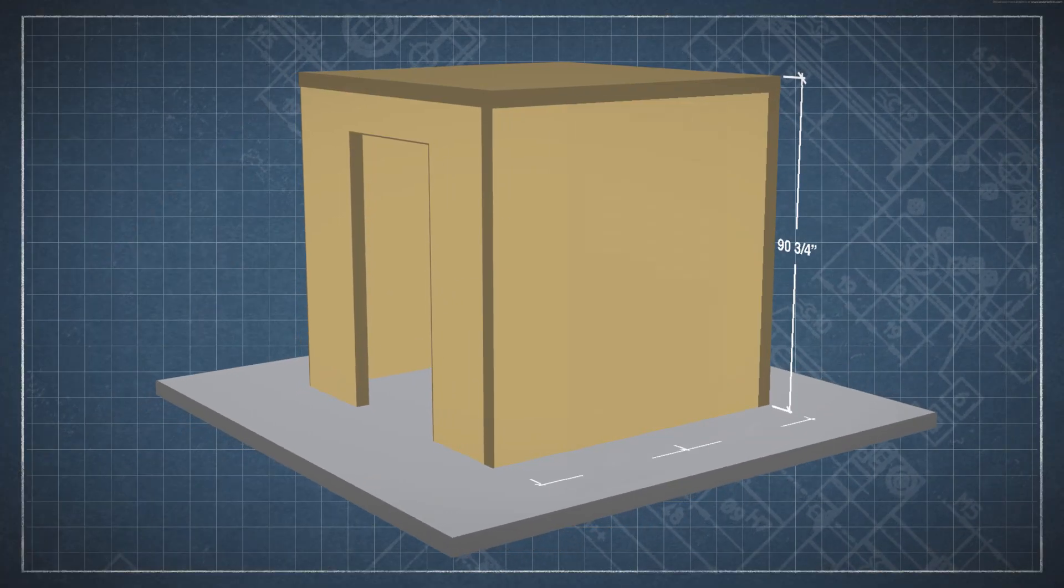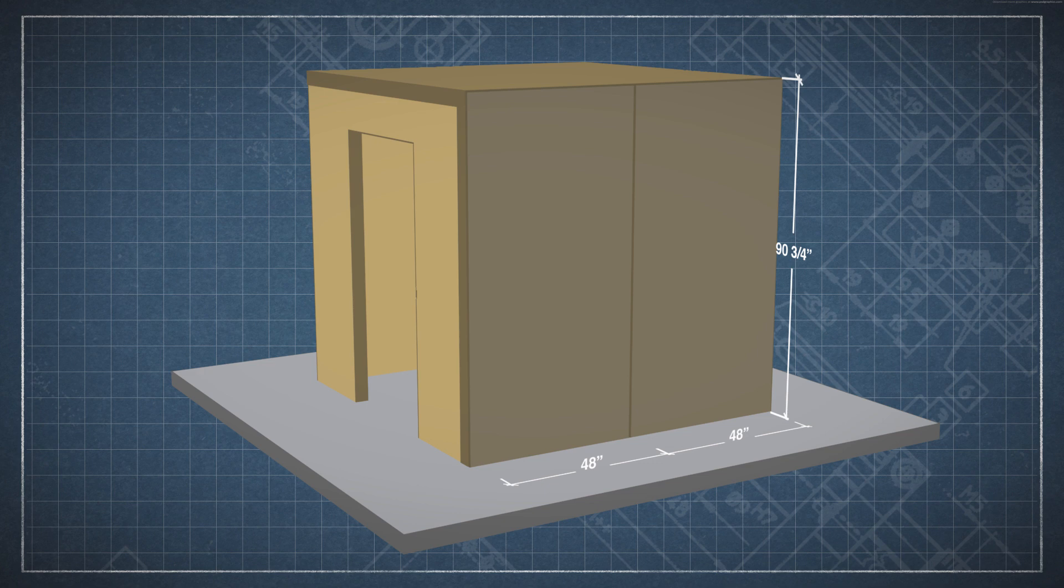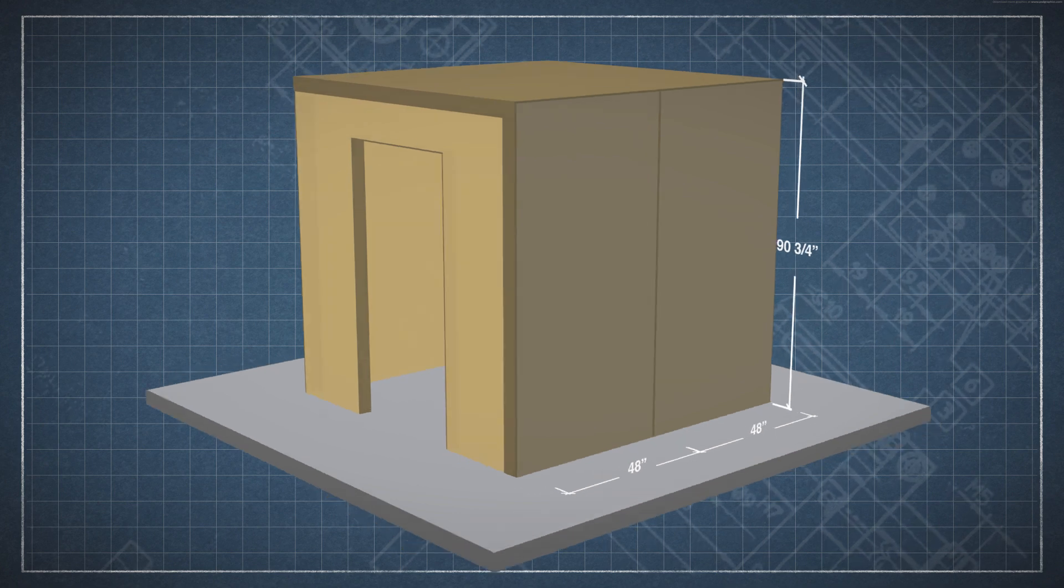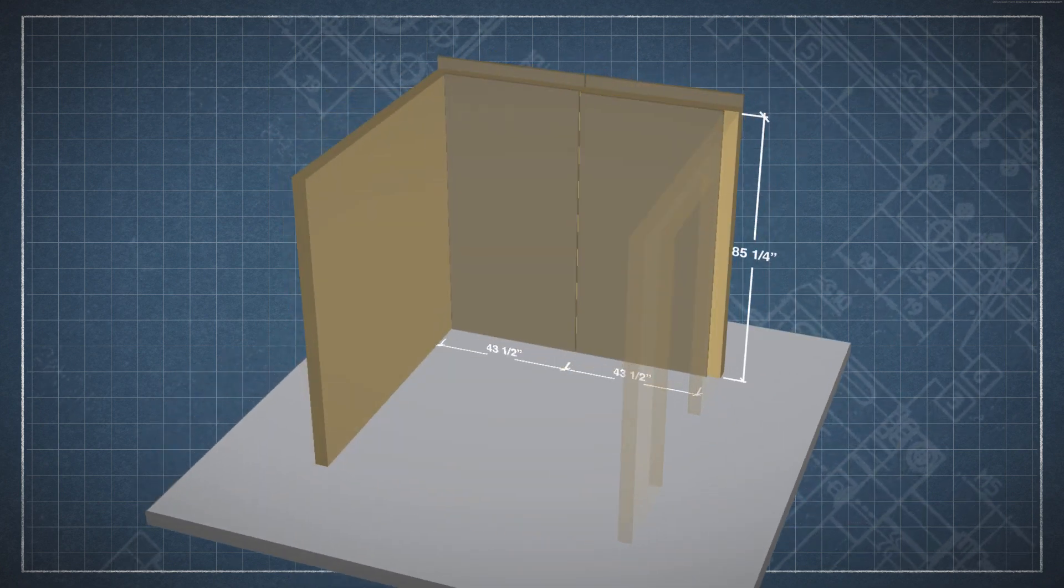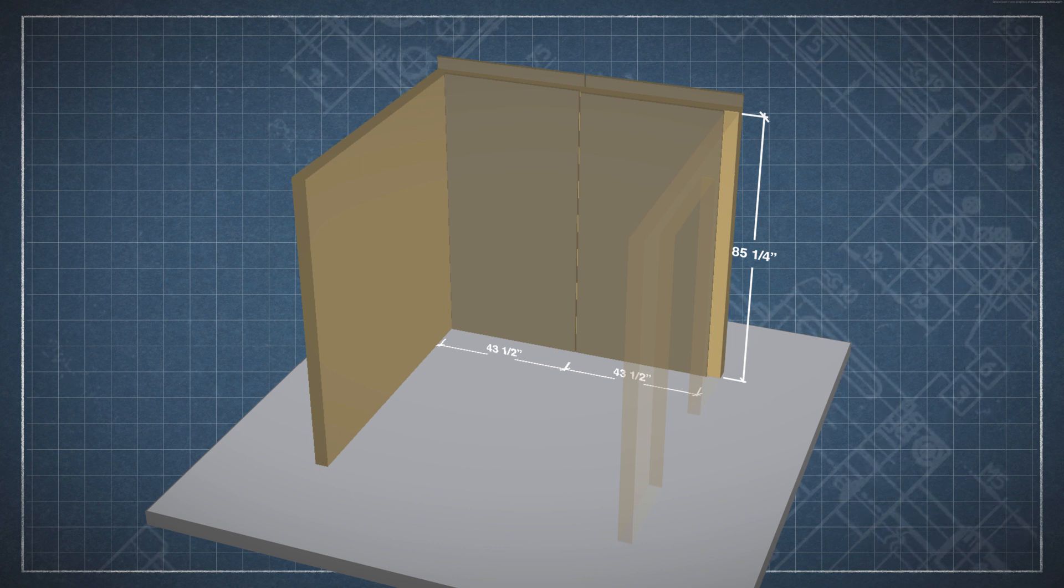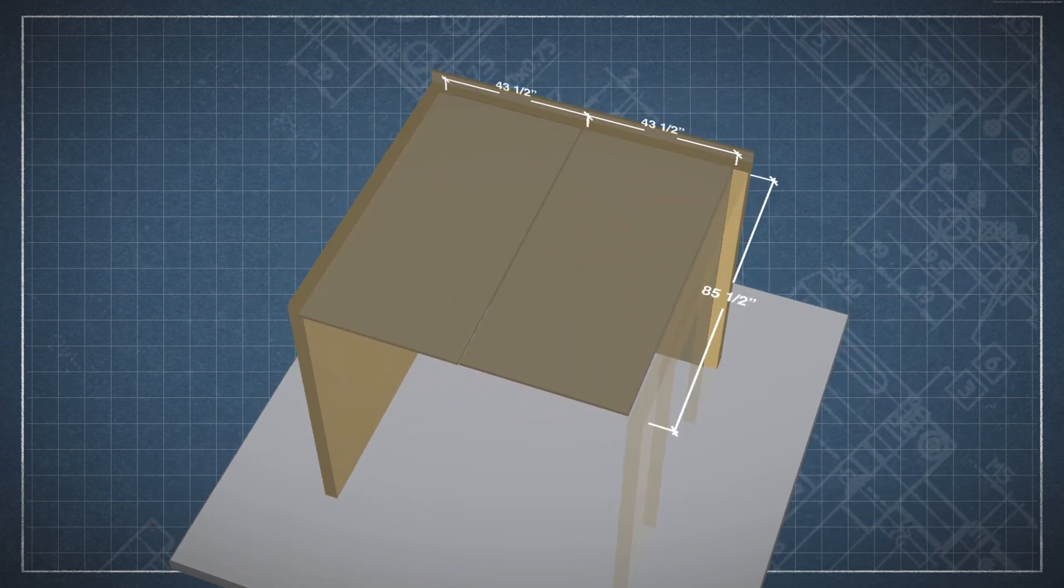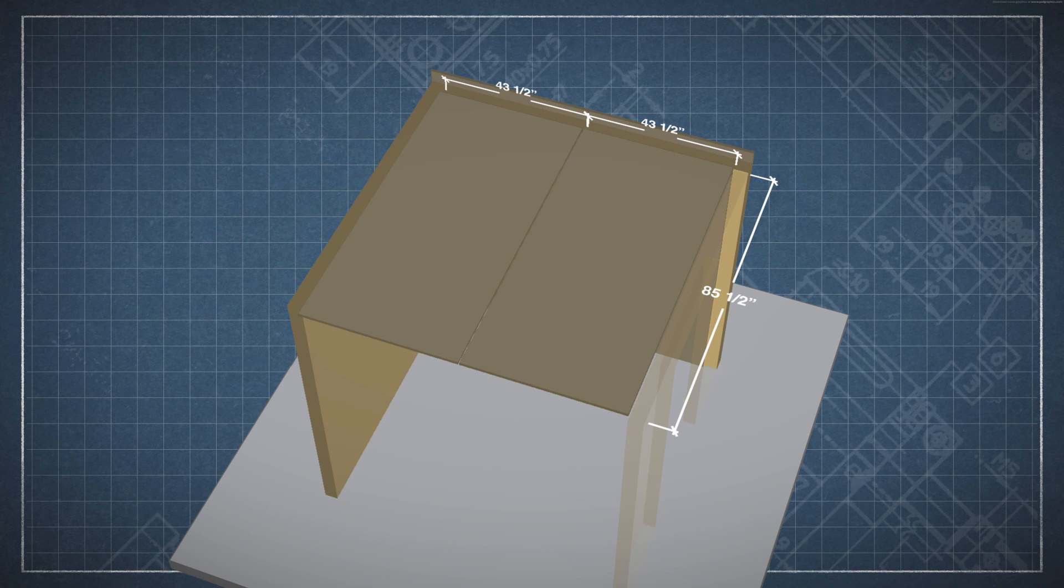This equals 48 inches by 90¾ inches for each of the exterior walls, 43½ inches by 85¼ inches for each of the interior walls, and 42¾ inches by 85½ inches for the ceiling.